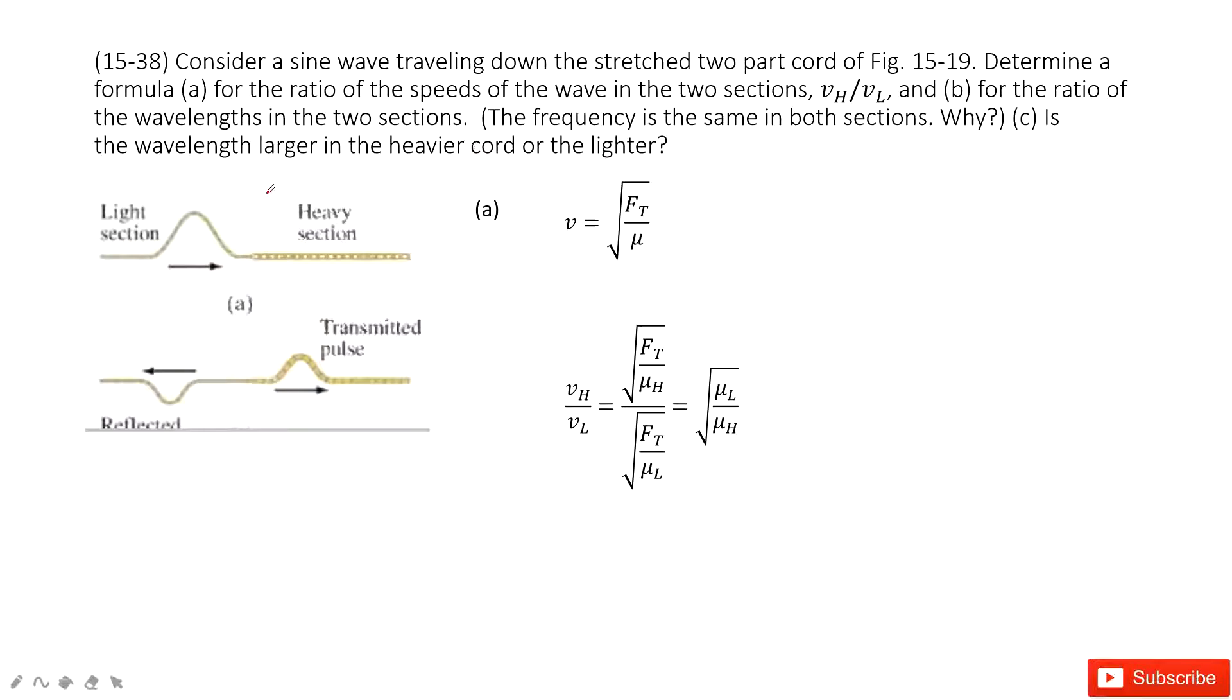For this one, we can see this cable has two parts: light sections and heavy sections, and the linear density ratio is given. The first thing we need to find is the wave speed ratio.